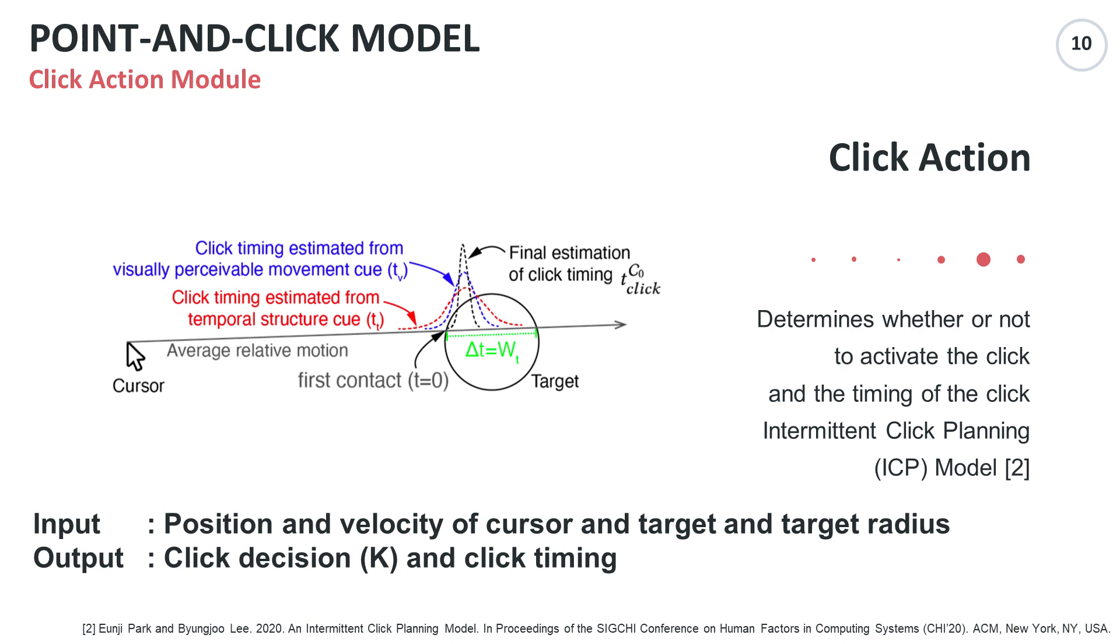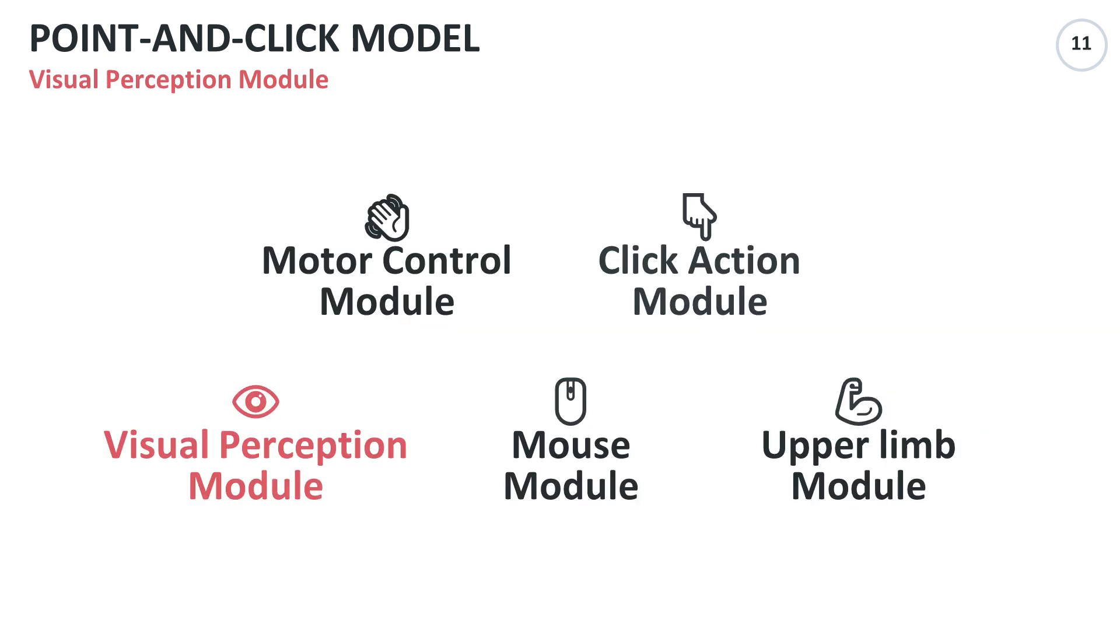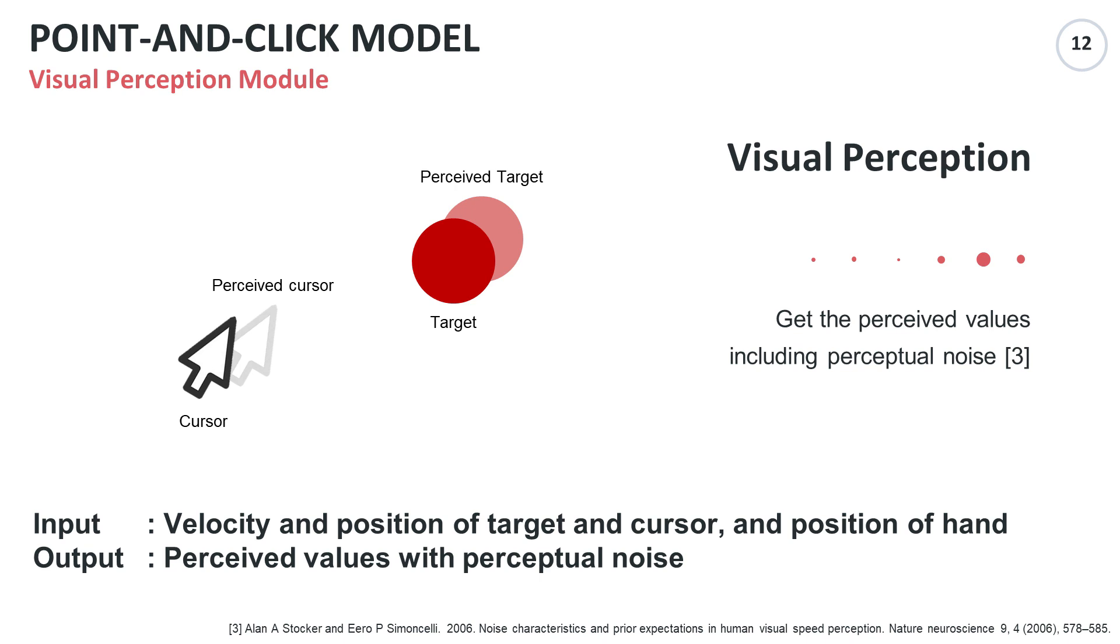The third module is the visual perception. The visual perception module receives the velocity and position of the target and cursor and the position of the hand from the environment. The outputs are the perceived values including perceptual noise.